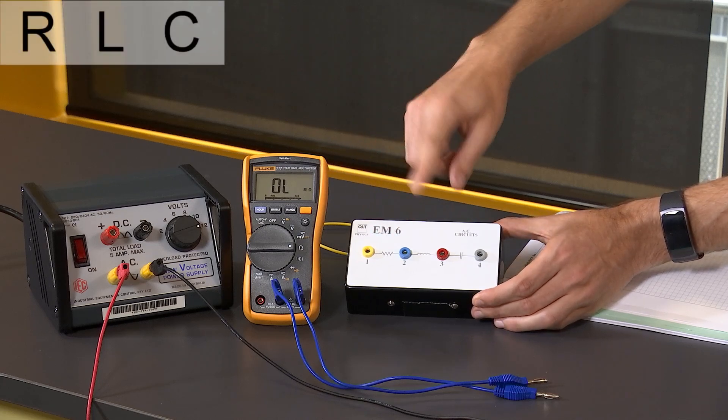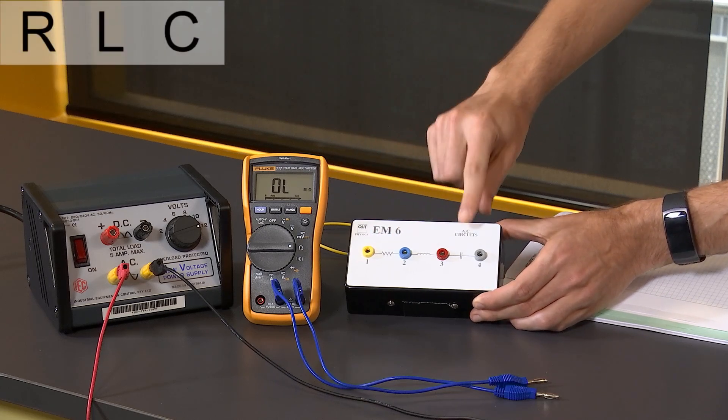In the test box we have a resistor R, an inductor L, and a capacitor C.